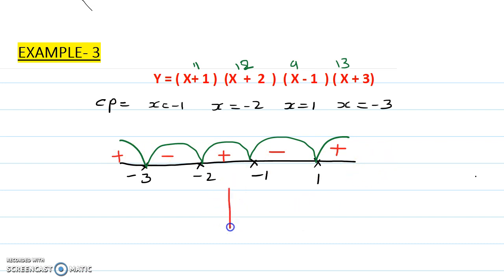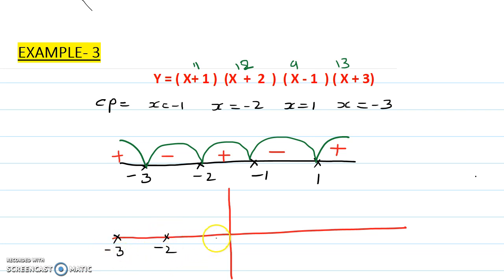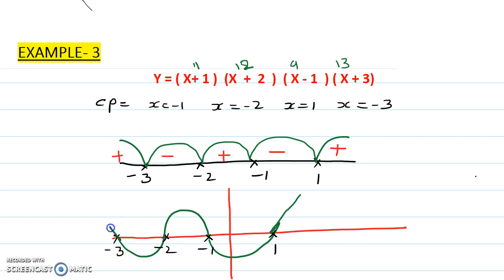Let's sketch the curve. Write down all the points: -3, -2, -1, and 1. After 1 it is positive, so the graph starts from the top. Between 1 and -1 it is negative. Between -1 and -2 it is positive. Between -2 and -3 it is negative. After -3 it goes in the negative direction. The turning point lies at the midpoint of -1 and -2, but you don't need to calculate it unless the graph intersects there.